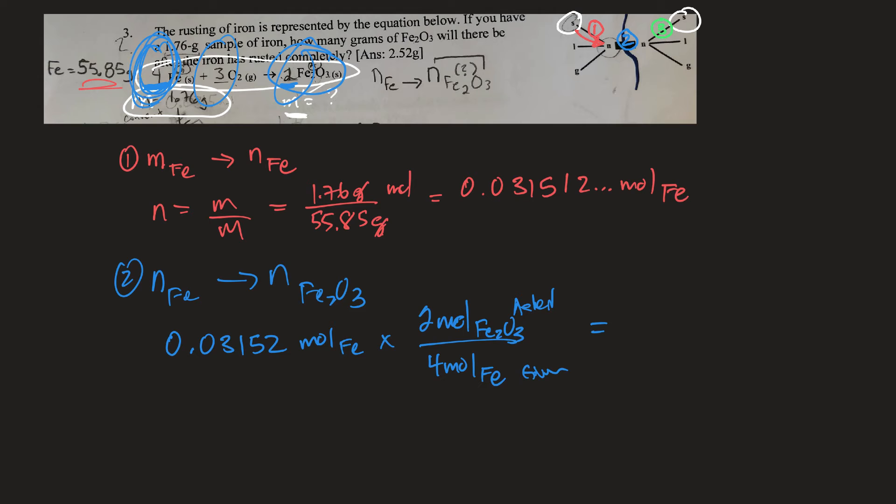And the number there is two. So it'll be two moles of iron three oxide. Okay. So I take the number I have times two equals divided by four equals. So it'll be 0.015756, et cetera, moles. And this is of Fe2O3. Okay. So I've gone across the river now.